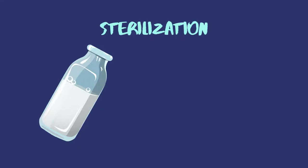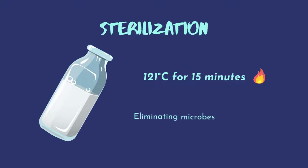When compared to pasteurization, sterilization uses a higher temperature and a longer time — for example, 121 degrees Celsius for 15 minutes or equivalent. The goal of sterilization is to eliminate all microbes, for example Clostridium botulinum.